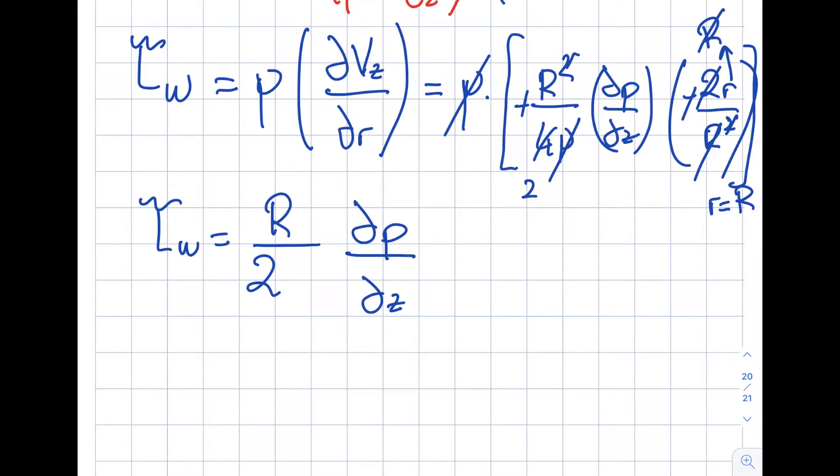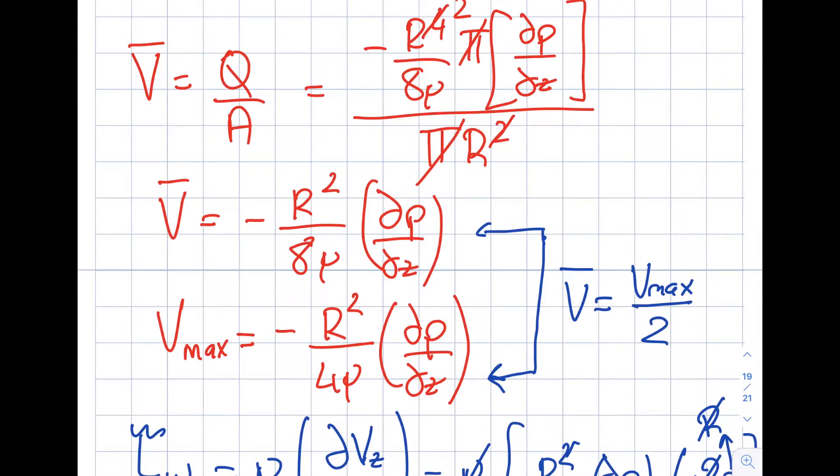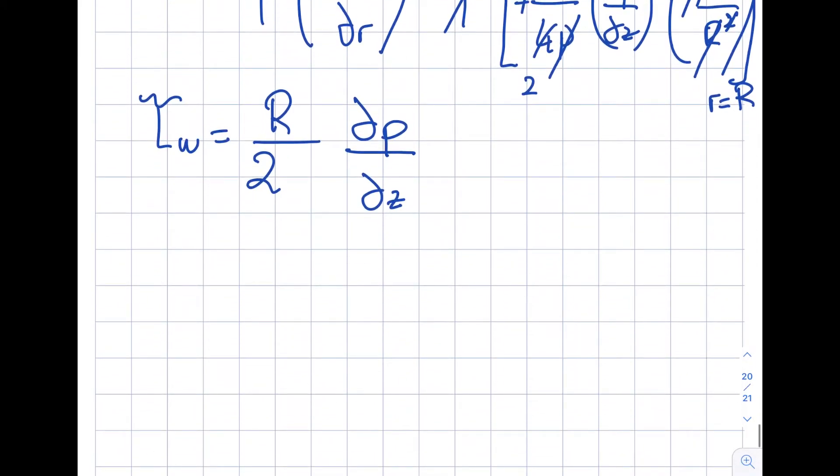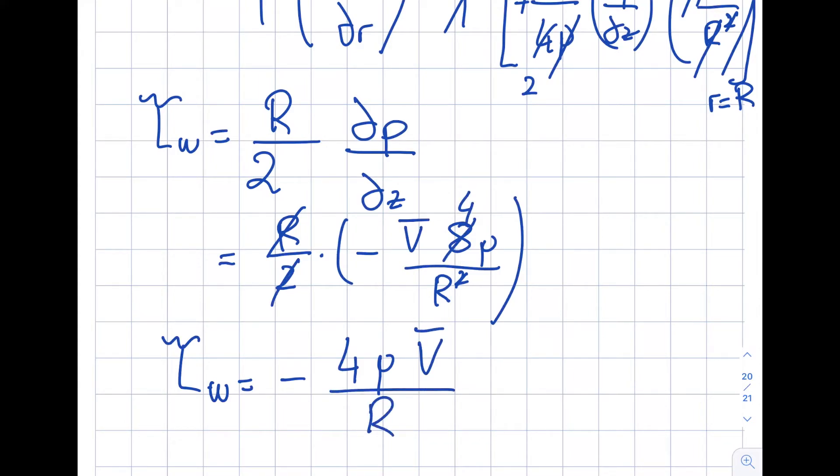So now let's plug it in. So τ_wall then will be equal to, okay, minus is cancel, this becomes 2. And when I plug r is equal to capital R over here, so this cancels. And I have an R over here, so this and this cancels. I have a lot of cancellations, you can see. R/(2μ) del P/del z. Actually, you can see it, there's viscosity here, so I don't even need this. So it's very simple: R/2 times del P/del z.